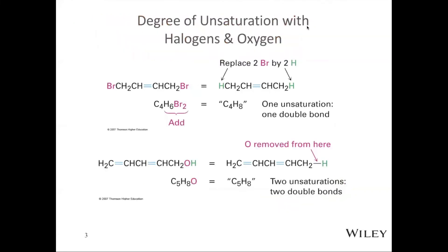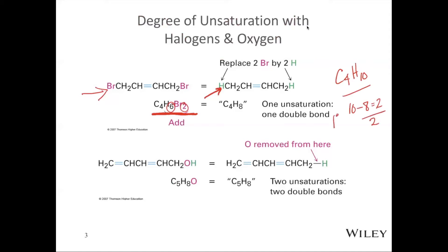If we want to talk about molecules that have halogens, we simply replace the halogen with a hydrogen. Anytime we have a halogen it really just replaced a hydrogen — each halogen is bonded to our molecule by one bond, just like a hydrogen. So if we had C4H6Br2, what we're going to do is equate that to C4H8. The saturated compound would be C4H10, but we only have eight H's. So we take 10 minus 8 which is 2, divide by 2, and that gives us one degree of unsaturation. Halogens are simple — you just add the halogens to the H's.